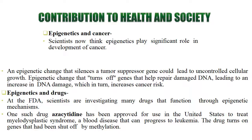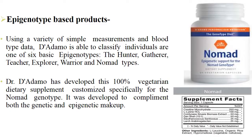Contribution to health and society: In cancer treatment, drugs like azacitidine have been approved for use in the US to treat myelodysplastic syndrome, a blood disease that can progress to leukemia. The drug turns on genes that had been shut off by the methylation process. Epigenetics-based products include blood-type sample measurement; the ADEMO system classifies individuals into six basic epigenetic types — hunter, gatherer, teacher, explorer, warrior, and nomad. The company has developed 100% vegetarian dietary supplements customized specifically for each genotype, developed to complement both genetic and epigenetic makeup.